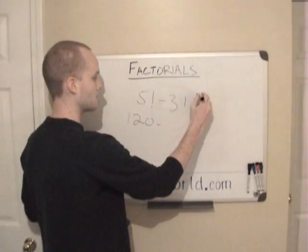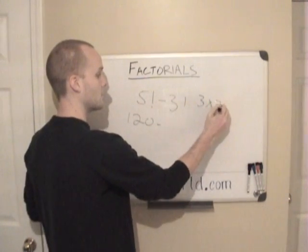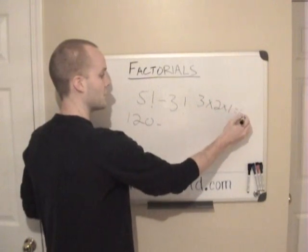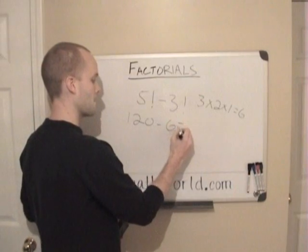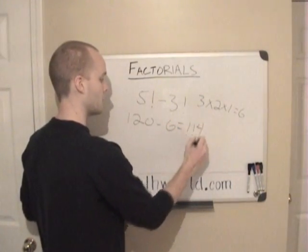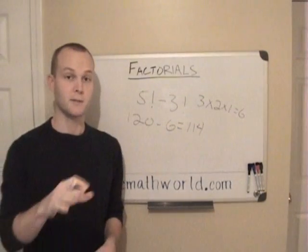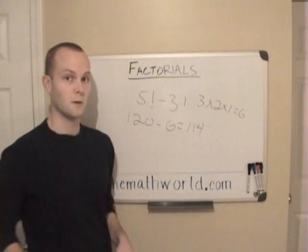And 3 factorial, 3 times 2 times 1 equals 6. So 5 factorial minus 6 equals 114. So 5 factorial minus 3 factorial is 114.